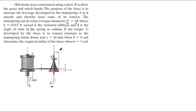If the torque Tf developed by the fusee is to remain constant as the main spring winds down, and x = 10 millimeters when θ = 4 radians, find the required radius of the fusee when θ = 3 radians.